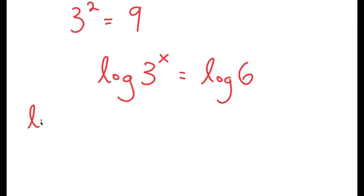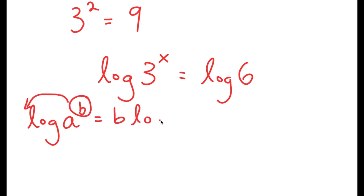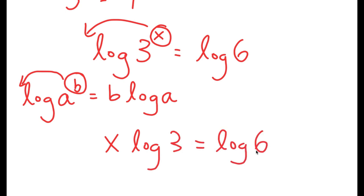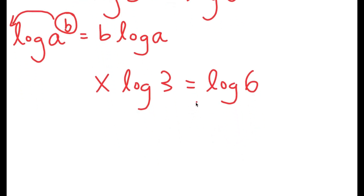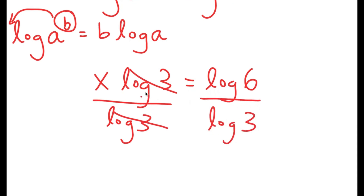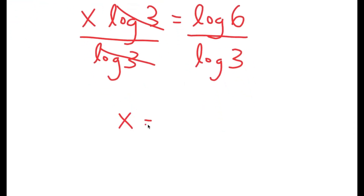From here, if I have something in the form log of a to the power of b, I can move this exponent b to the front, so this turns into b times log a. So I have log of 3 to the power of x and I can move x to the front. I get x times log 3 is equal to log 6. Now I'm going to divide both sides by log 3 because we want to isolate x. These two cancel out and I get x is equal to log 6 over log 3.